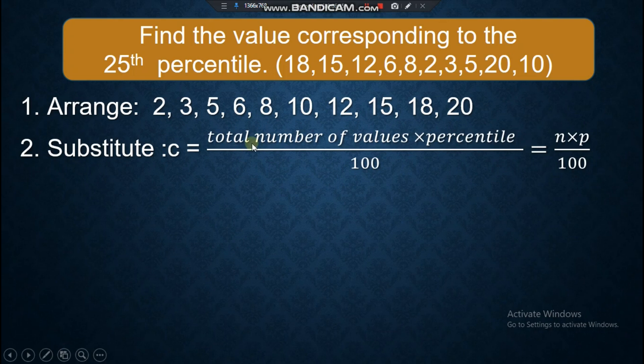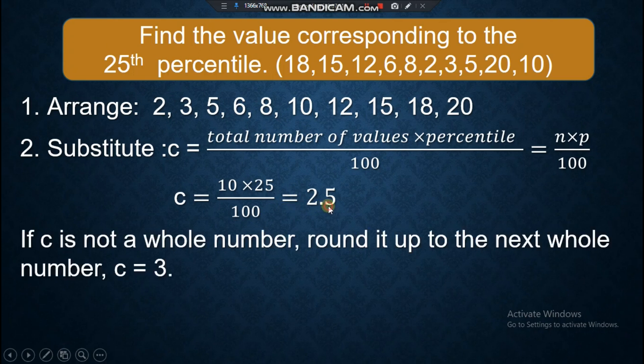Substitute. This is the formula in finding the score: C equals the total number of values times the percentile all over 100. Our total number of values is 10. The percentile is 25. If C is not a whole number, round it up to the next whole number. Is 2.5 a whole number? No, it's not a whole number because there is a value in its decimal or fractional part. Since there is a value, it is not a whole number, so round it up to the next number. That is 3.